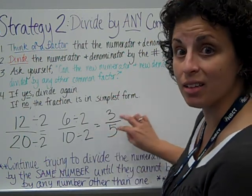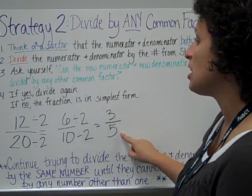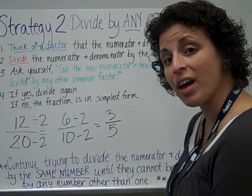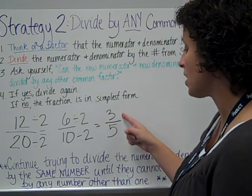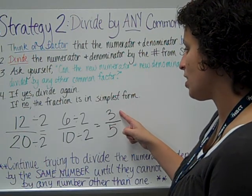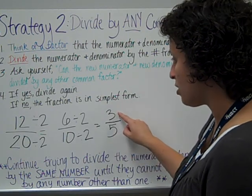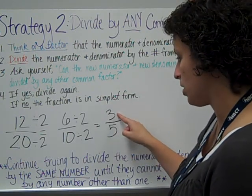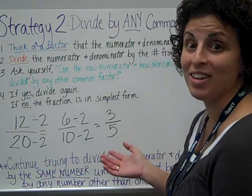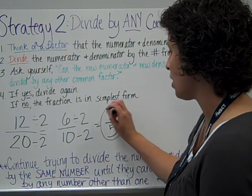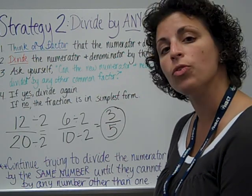Now that I've divided again, I need to ask myself the question again. Can the new numerator and the new denominator be divided by any other common factors? Well, I know that the way to make 3, the only way when I'm multiplying, is 1 times 3. And if I divide by 1, it's not going to make my 3 any smaller. So I can't do that. If I divided by 3, that would get smaller. But can I divide 5 by 3 and get a whole number answer? No. So this fraction has nothing else in common other than 1. And so it is in simplest form.